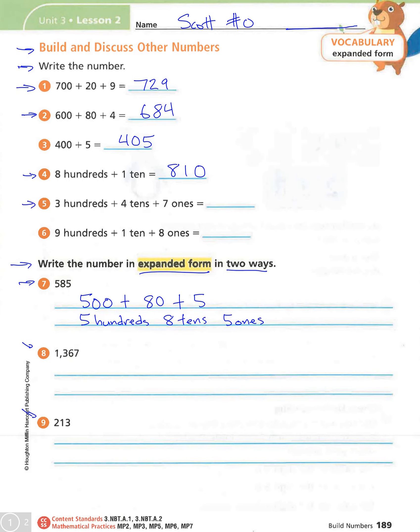On number 5 here, 347. So 3 hundreds, 4 tens, and 7 ones.